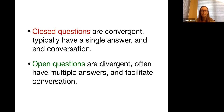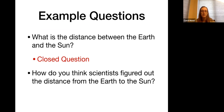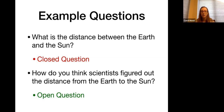Let's look at some examples. 'What is the distance between the earth and the sun?' This is a closed question — it has basically one answer. We could rewrite it as an open question: 'How do you think scientists figured out the distance from the earth to the sun?' You can see how the closed version shuts down conversation, whereas the open version could lead to a fruitful discussion about measuring distances in space.